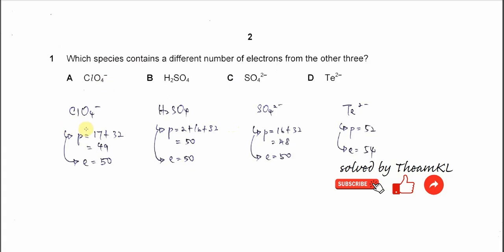Let's start from A, chloride ion. So one chlorine and oxygen, the proton number is 17 plus 32, so it's 49. For the electron number, because it's a negative charge, it's 49 plus 1, so it's 50.